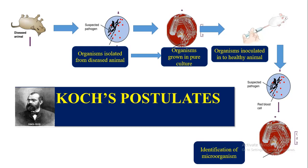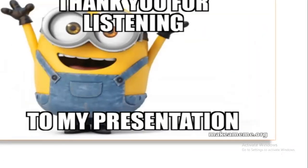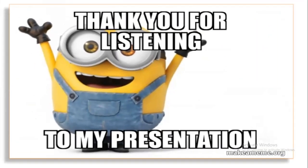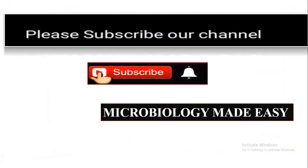When a suspected organism follows all these rules, it should be identified as a pathogenic organism. For a non-pathogenic organism, it should not produce disease and cannot be grown in culture media. Thank you for listening. Please subscribe to our channel, Microbiology Made Easy.